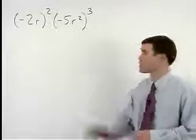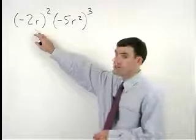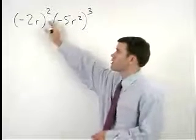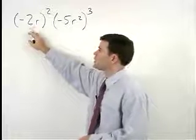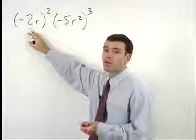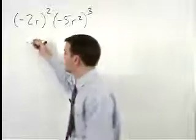Again we start this problem by applying the power rule. To simplify negative 2 r squared, we would first square the coefficient of negative 2. So we have negative 2 squared or negative 2 times negative 2, which is positive 4.